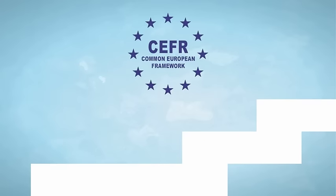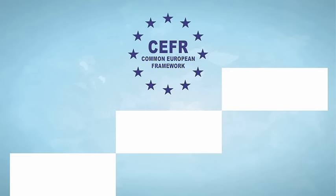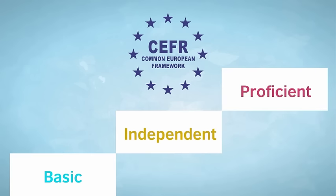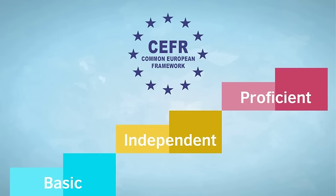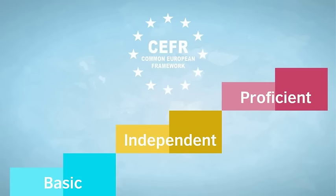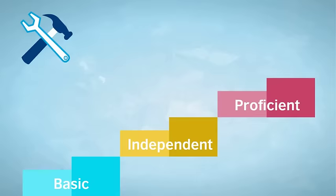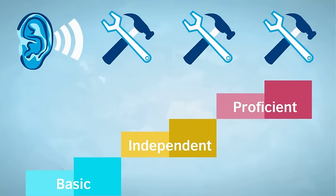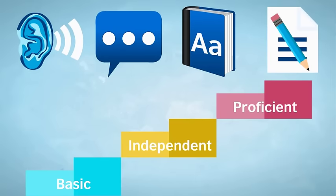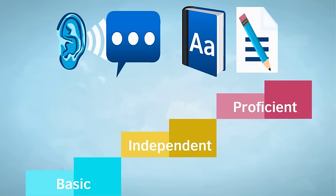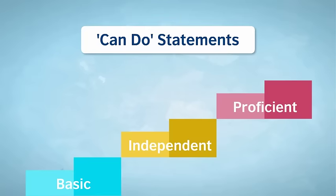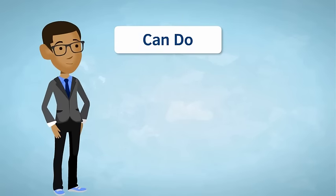Within the CEFR, the levels are described in three tiers – Basic, Independent and Proficient. Each of these tiers has two levels, making a scale of six levels in all. The CEFR describes what a person can do in a language as they progress from the lowest level to the highest. It consists of a whole series of descriptions associated with each of the four skills – listening, speaking, reading and writing. These descriptions are called can-do statements, and they focus on the different things someone can do with a language.